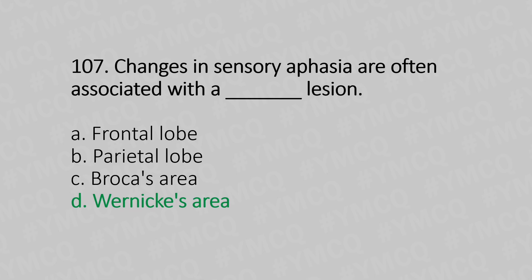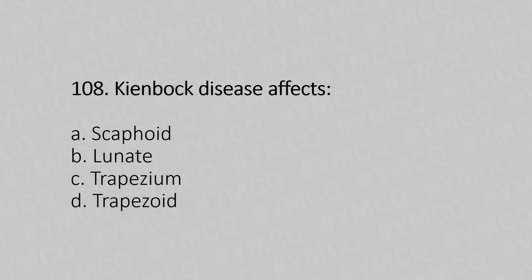Question number 108: Kienbock's disease affects — Option A: scaphoid, Option B: lunate, Option C: trapezoid, Option D: trapezoid. The answer is Option B, lunate.